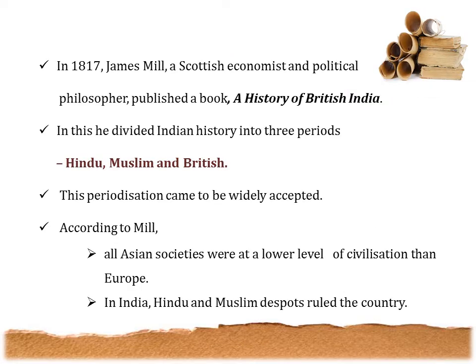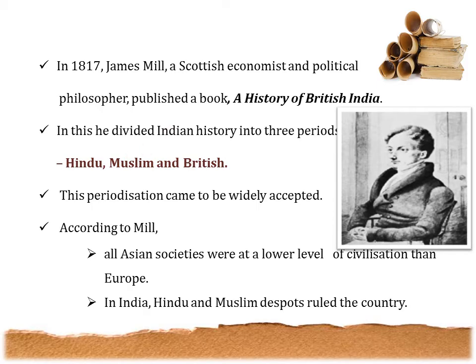In 1817, a historian named James Mill — also a Scottish economist and political philosopher — published a massive three-volume work called History of British India. In that book, he divided Indian history into three periods: the Hindu period, the Muslim period, and the British period. This periodization came to be widely accepted.